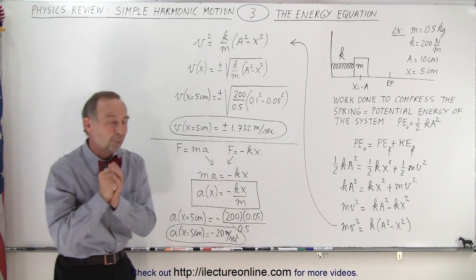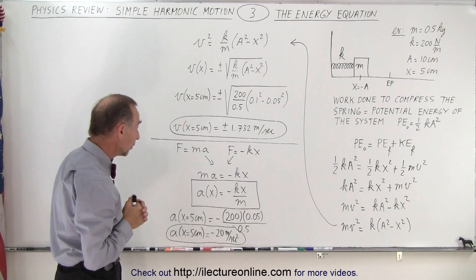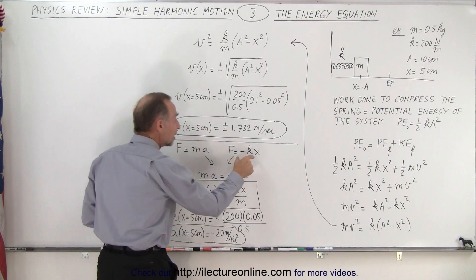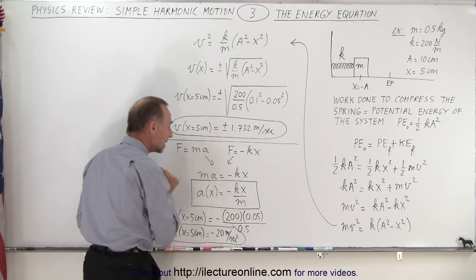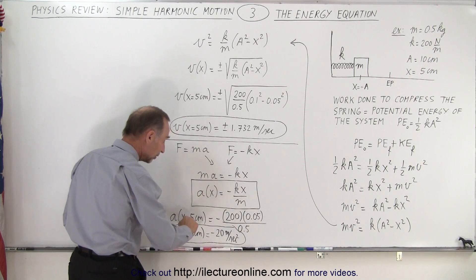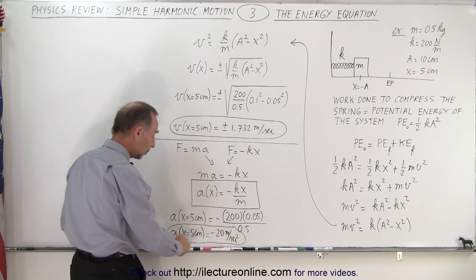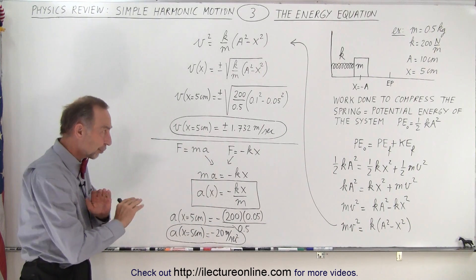To find the acceleration of the object when it's 5 centimeters to the right of the equilibrium point, we utilize Newton's second law and the restoring force equation of a spring. We solve that for a, the acceleration as a function of position, and then if we plug in the value for x equals 5 centimeters, we end up with minus 20 meters per second squared.